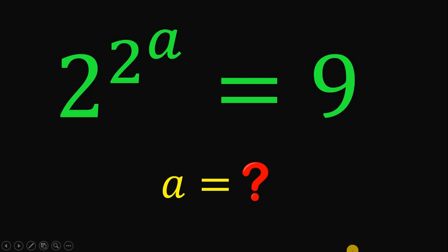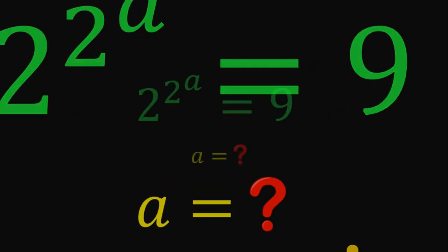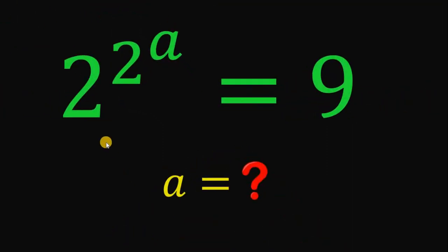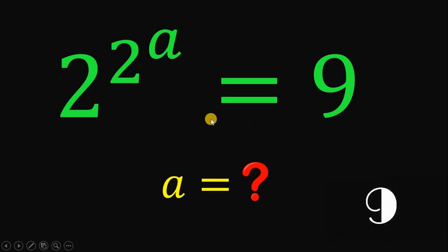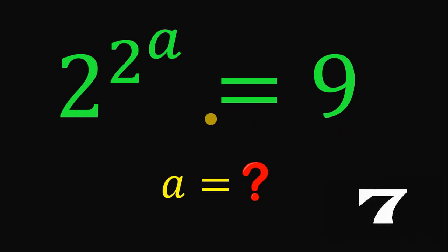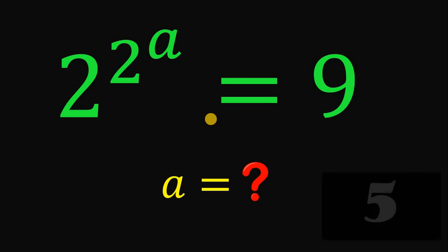What is the value of A, given that 2 raised to 2 raised to A equals 9? You can pause this video if you want to give this problem a try.